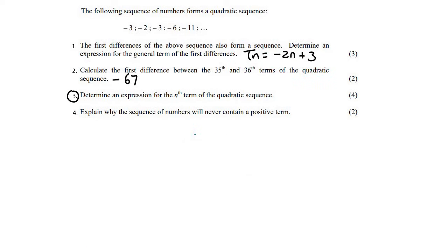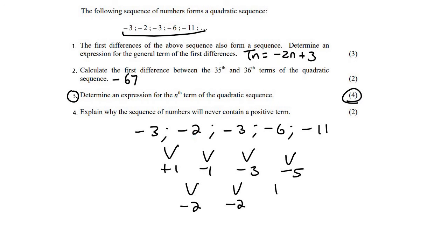Then number three says determine an expression for the Nth term of the quadratic. Now that's for four marks, because remember, to find a quadratic sequence, it's quite a lengthy process, but it's not difficult. So if we write this out again, then we go down a level. Then if we go down to the second differences, this will be minus two, minus two, and minus two.